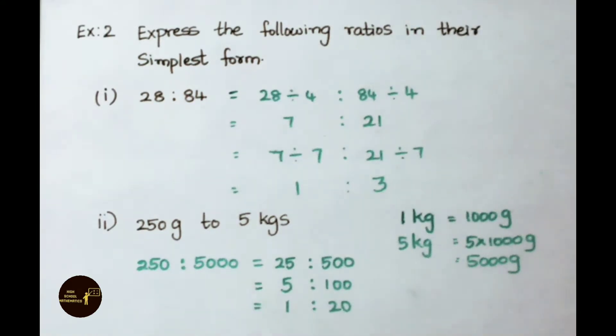Therefore the ratio is 250 is to 5000. On dividing the both terms with 10 we got 25 is to 500. Now again these two terms are dividing with 5. 5 table 25 is 5 times. 5 table 500 is 100 times. Again this 5 is to 100 can be simplified further on dividing both the terms with 5 now. 5 table 5 is 1 times. 5 table 100 is 20 times. Therefore simplest form of the given ratio is 1 is to 20.